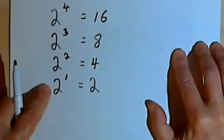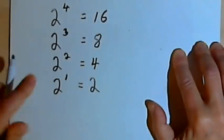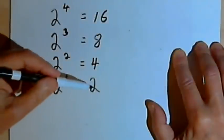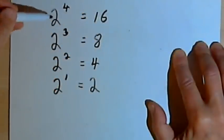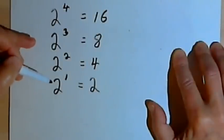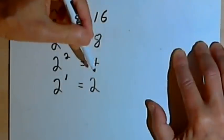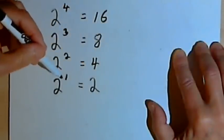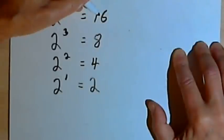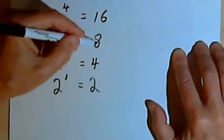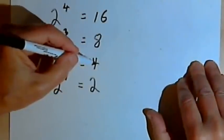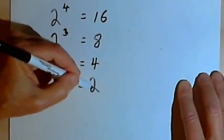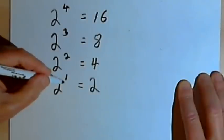So working our way up this pattern from an exponent of 1 to 2 to 3 to 4, we kept doubling the number. We kept multiplying it by the base. If we work our way down the pattern from 4 to 3 to 2 to 1 as the exponents, we could divide the number in half. 16 divided by 2 is 8. 8 divided by 2 is 4. 4 divided by 2 is 2.